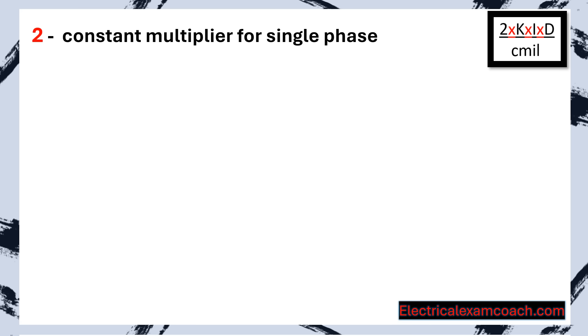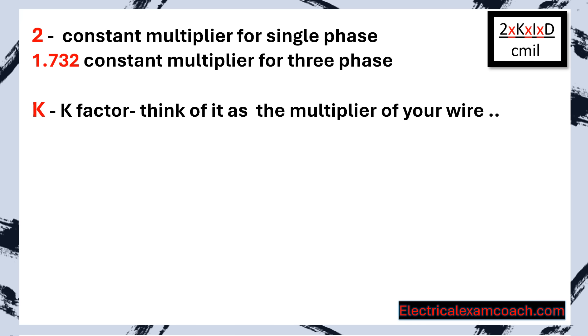2 is going to be our constant multiplier for single phase. If we're doing three phase, we're going to use 1.732 as our multiplier. K is going to be the K factor - think of it like a multiplier for your wire. For copper, it's 12.9 and aluminum, it's 21.2.